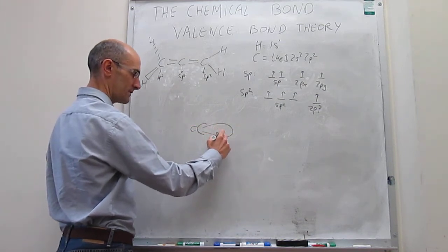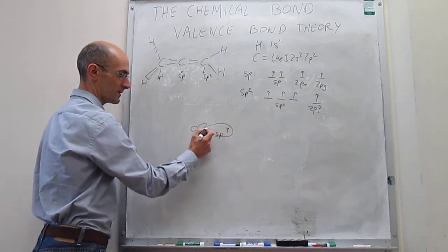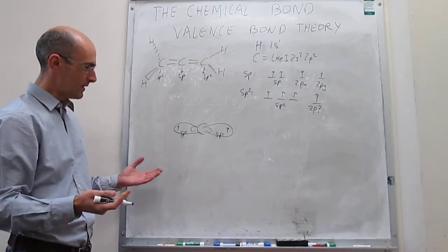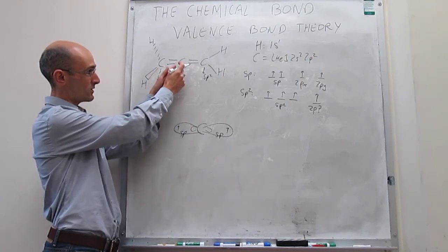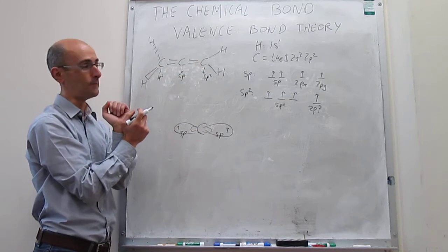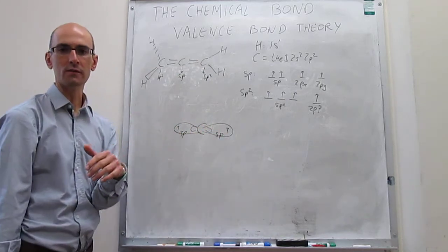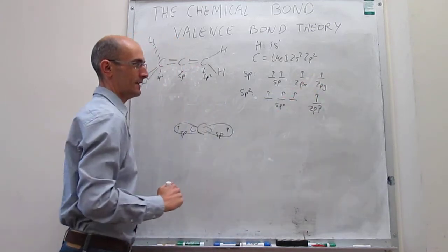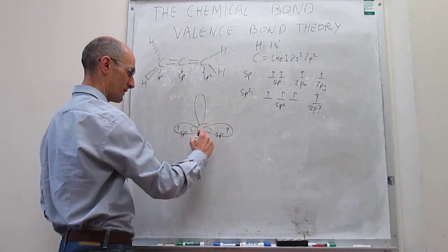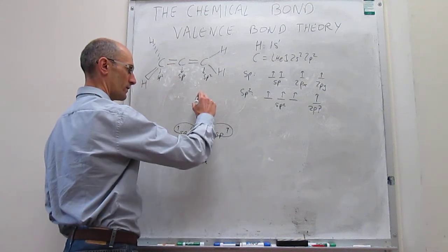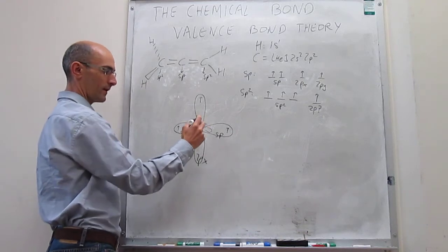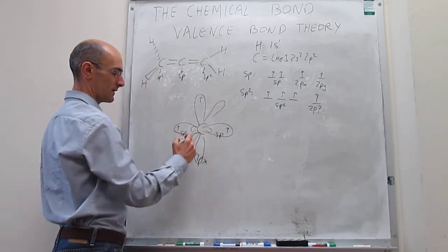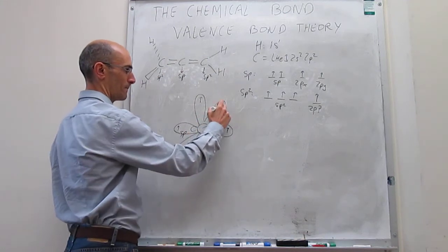Let's draw one of the sp orbitals with one electron, and the other sp hybrid orbital pointing in the opposite direction, also with one electron. This is very nice because it allows us to start establishing connections with those terminal carbon atoms — the overlaps here are going to be of the sigma type. With sp hybridization, there are two additional atomic orbitals to think about. We assume the 2px orbital is in the plane of the whiteboard with one electron, and the 2py orbital is coming in and out of the plane, also with one electron.